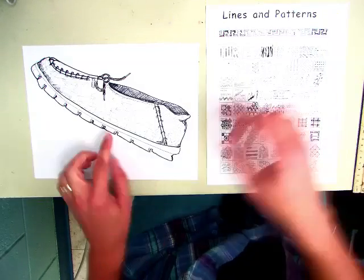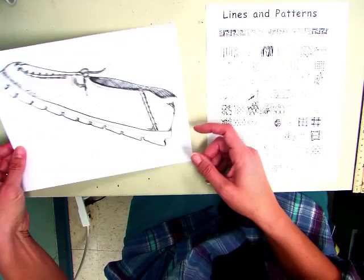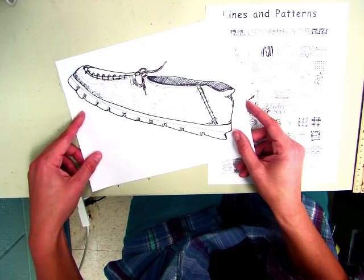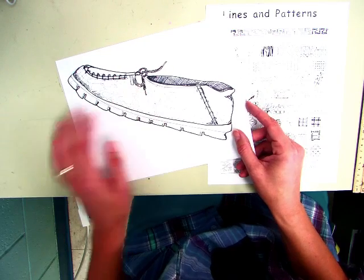Fifth grade. If you have not finished outlining your shoe with thick and thin lines, I want you to do that with Sharpie first and then put it in your folder for later.